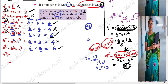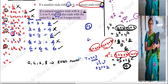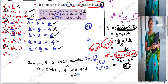The conclusion is: the values are 2, 4, 6, 8 — all even numbers. When N is even, 4 to the power N will end with the digit 6.